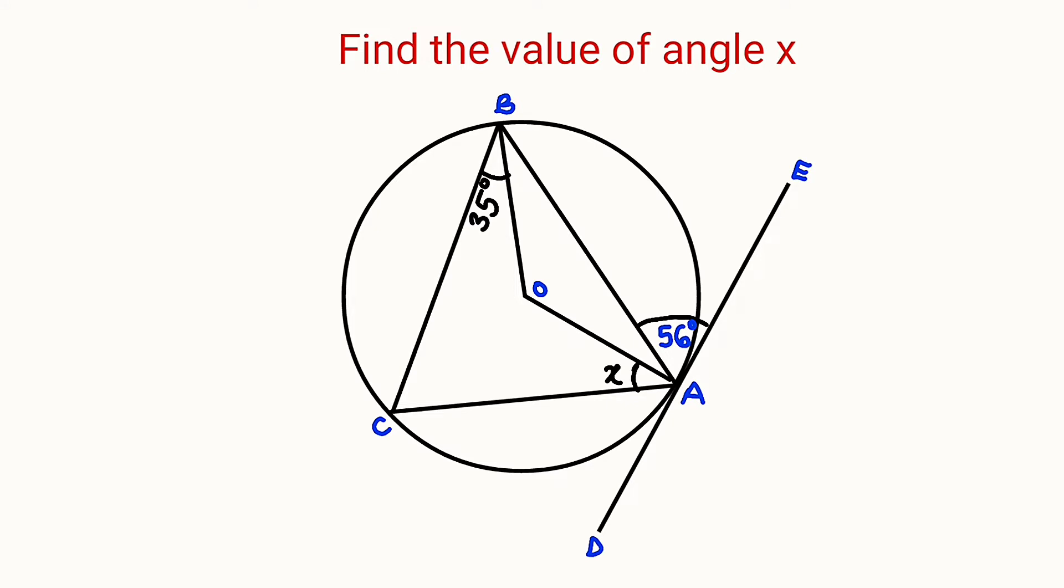But first of all, let me explain the diagram. You can clearly see that this is a circle. And remember, a line that touches a circle at exactly one point is called a tangent.